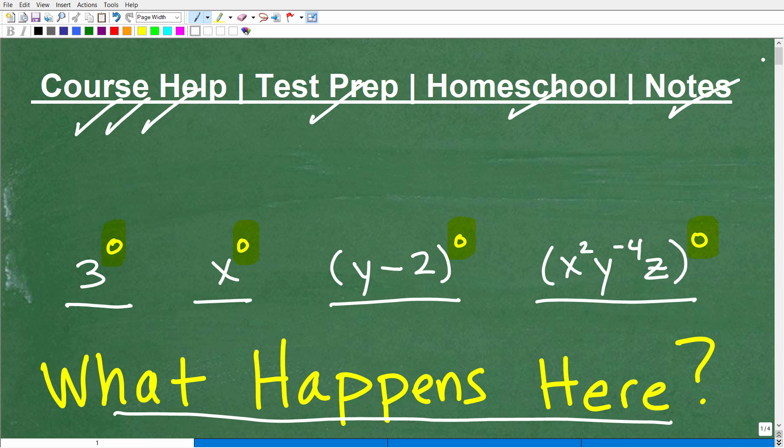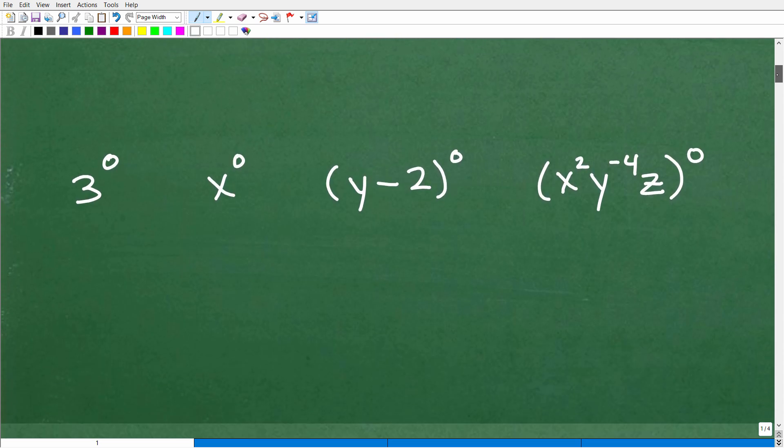Okay, so let's answer the question, and let's go down here and answer the question right now. We have 3 to the 0, x to the 0, y minus 2 to the 0, and then we have this expression to the 0 power. All of these are equal to,